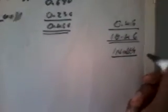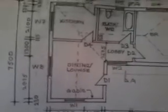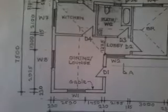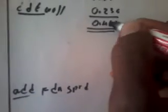Now for the width: on the plan the width is 7,500 millimeters, which converts to 7.500 meters. We add the foundation spread again — the same 0.460 we calculated above. So 7.500 + 0.460 = 7.960 m. That is our adjusted width.